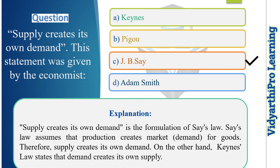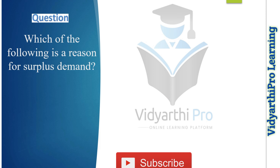This is the formulation of Say's Law. Say's Law assumes that production creates market demand for goods; therefore, supply creates its own demand. On the other hand, Keynes's law states that demand creates its own supply. Therefore, 'supply creates its own demand' was given by economist JB Say, and the correct answer is option C.